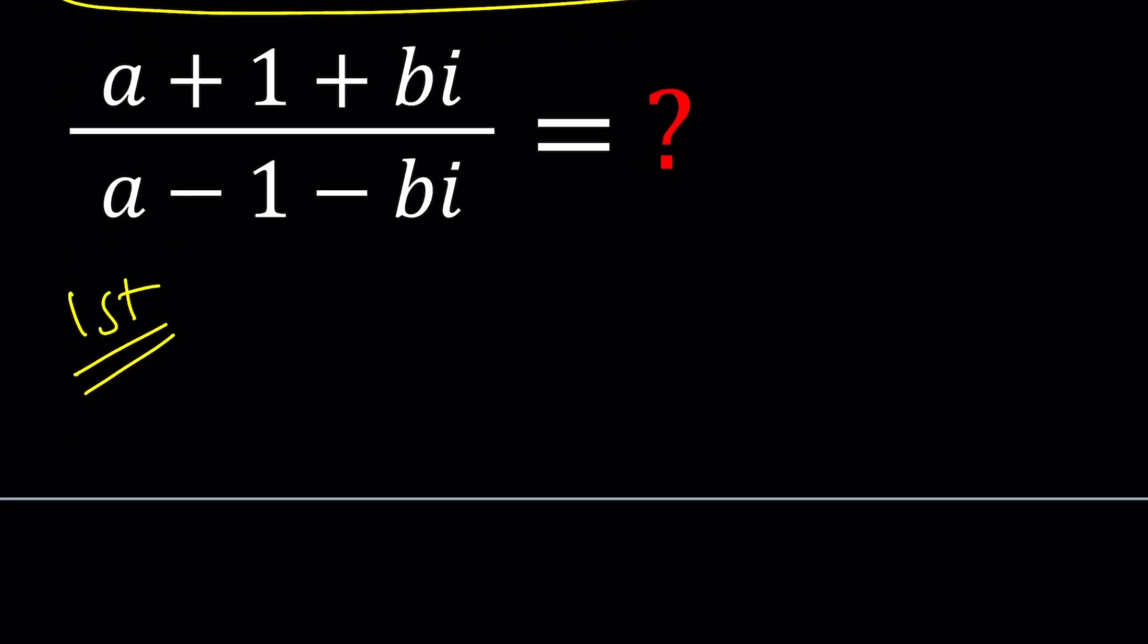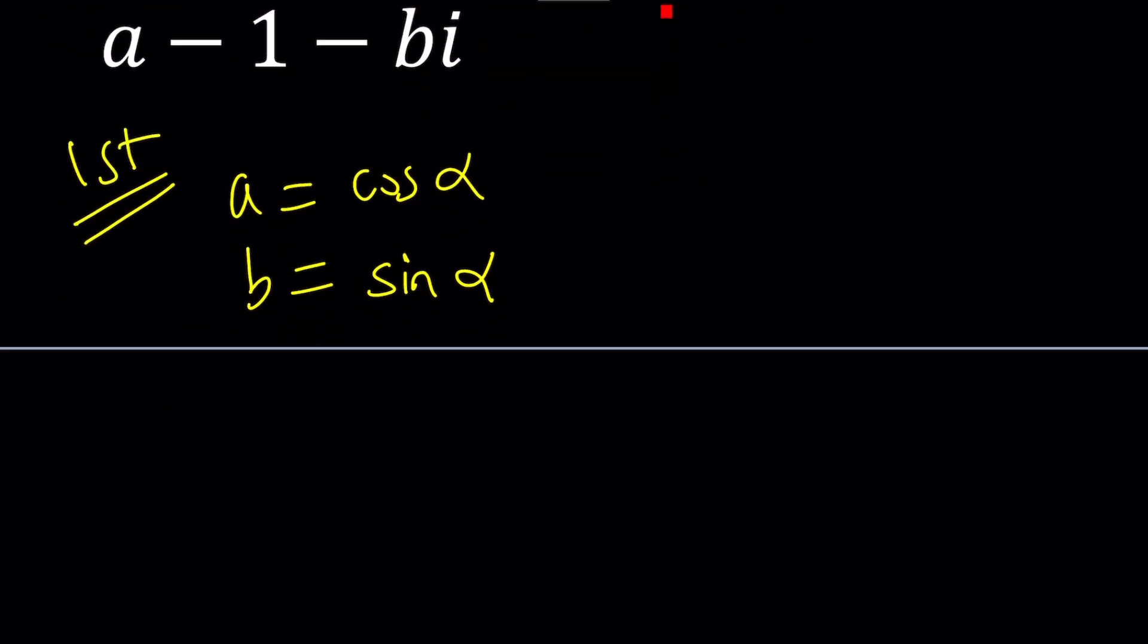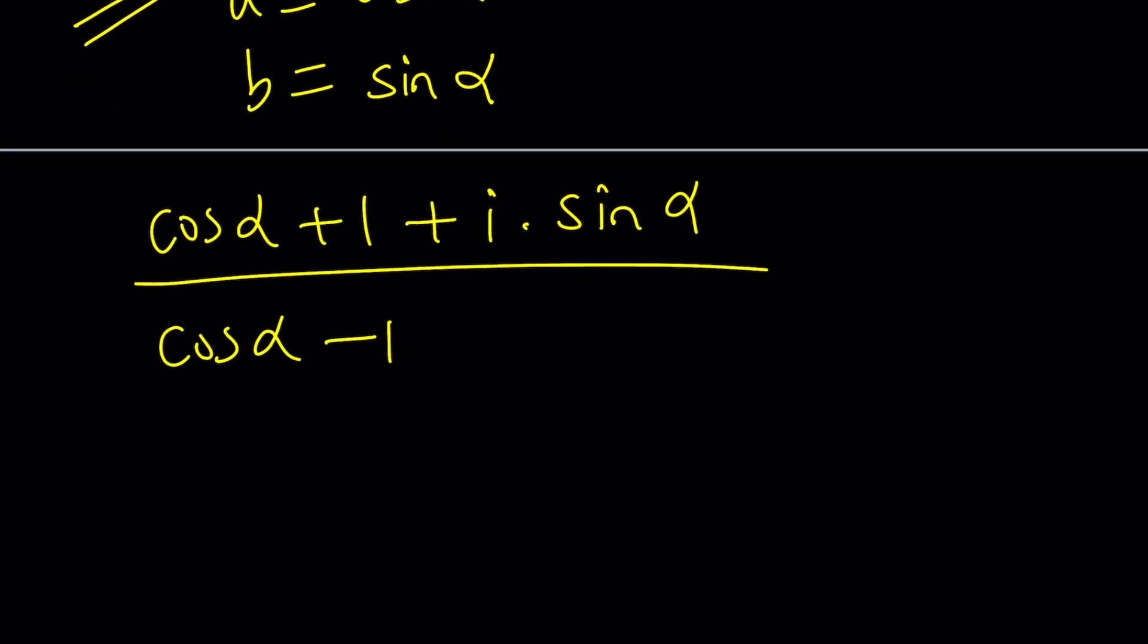If you have two numbers whose sum of squares is 1, then you can do the following: a is equal to cosine of alpha and b is equal to sine of alpha. Alpha is just an angle. And then when we do the replacement, obviously if you plug it in here, it's going to work because sine squared plus cosine squared is equal to 1. Now let's go ahead and plug in these values.